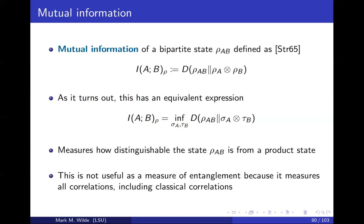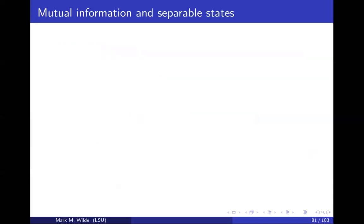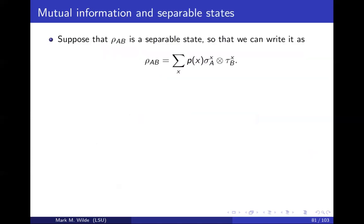On its own, mutual information is not a useful measure of entanglement because it's measuring all correlations, including the classical ones. You could plug in a separable state and the quantum mutual information could be non-zero, so it's not particularly useful as an entanglement measure on its own. However, we can modify things.